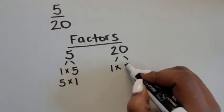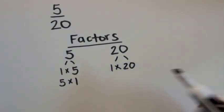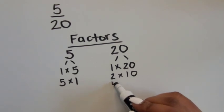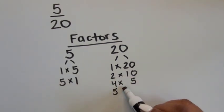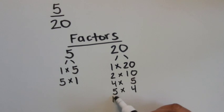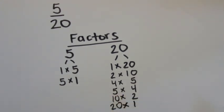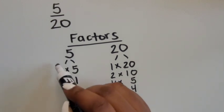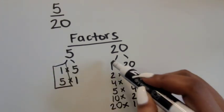To create 5 as a product we can multiply 1 times 5 and 5 times 1. To create 20 as a product we can multiply 1 times 20, 2 times 10, 4 times 5, 5 times 4, 10 times 2, and 20 times 1.